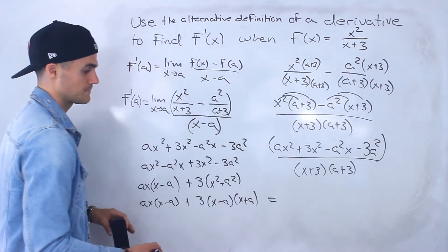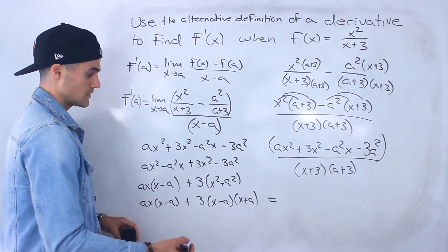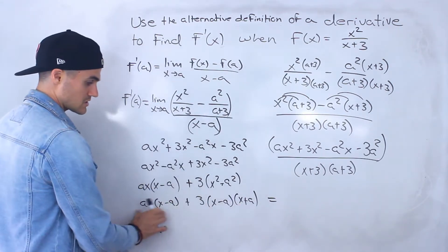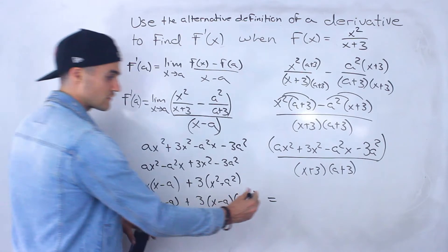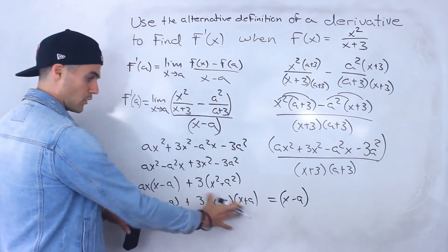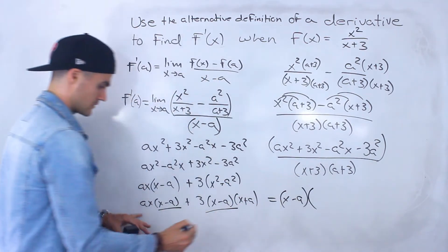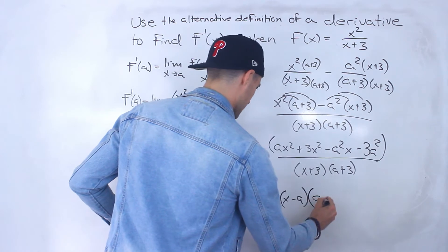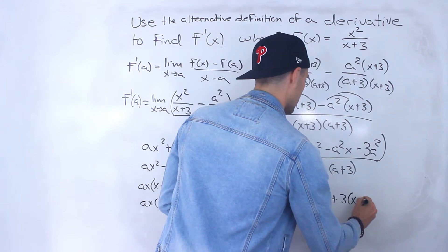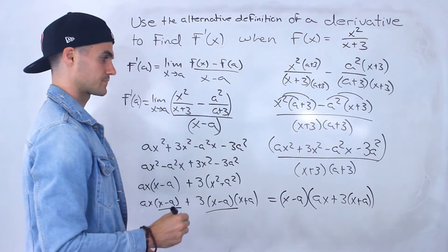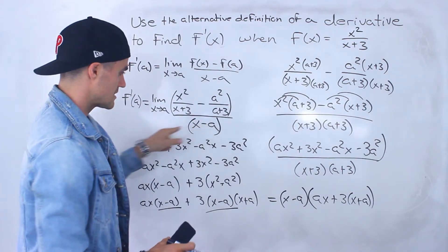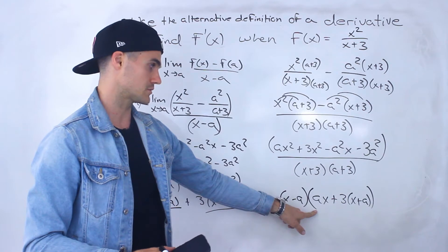Both expressions have an x minus a, so we factor out x minus a from both, leaving ax plus 3 times x plus a. So this entire numerator simplified all the way to x minus a times ax plus 3 times x plus a.